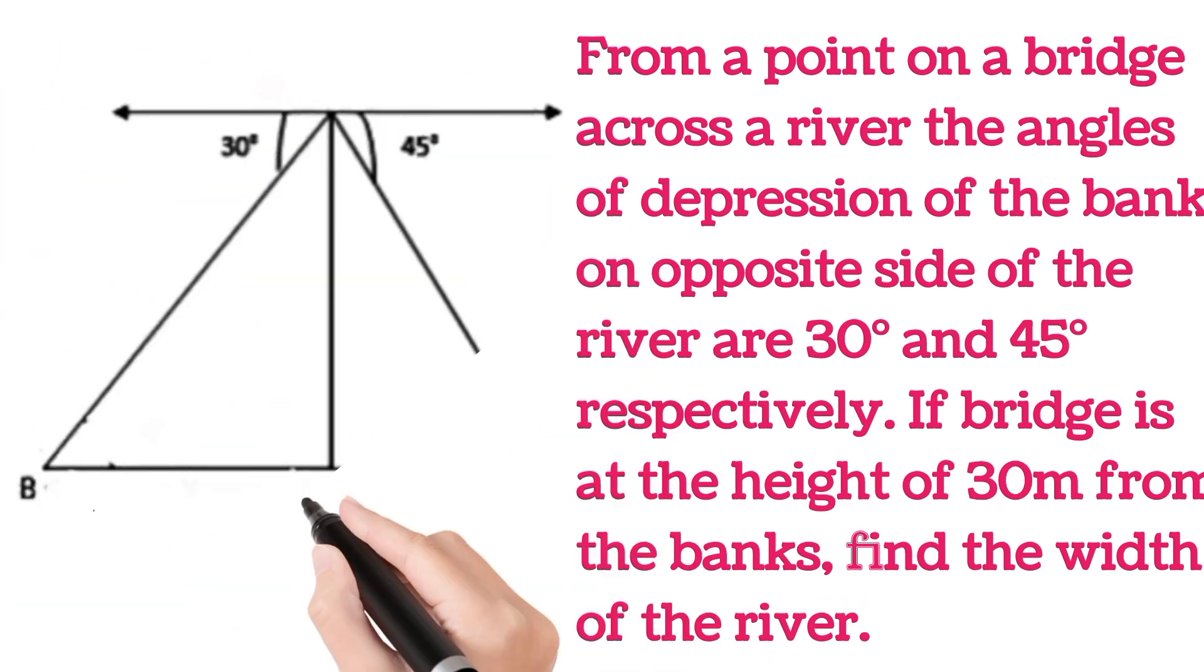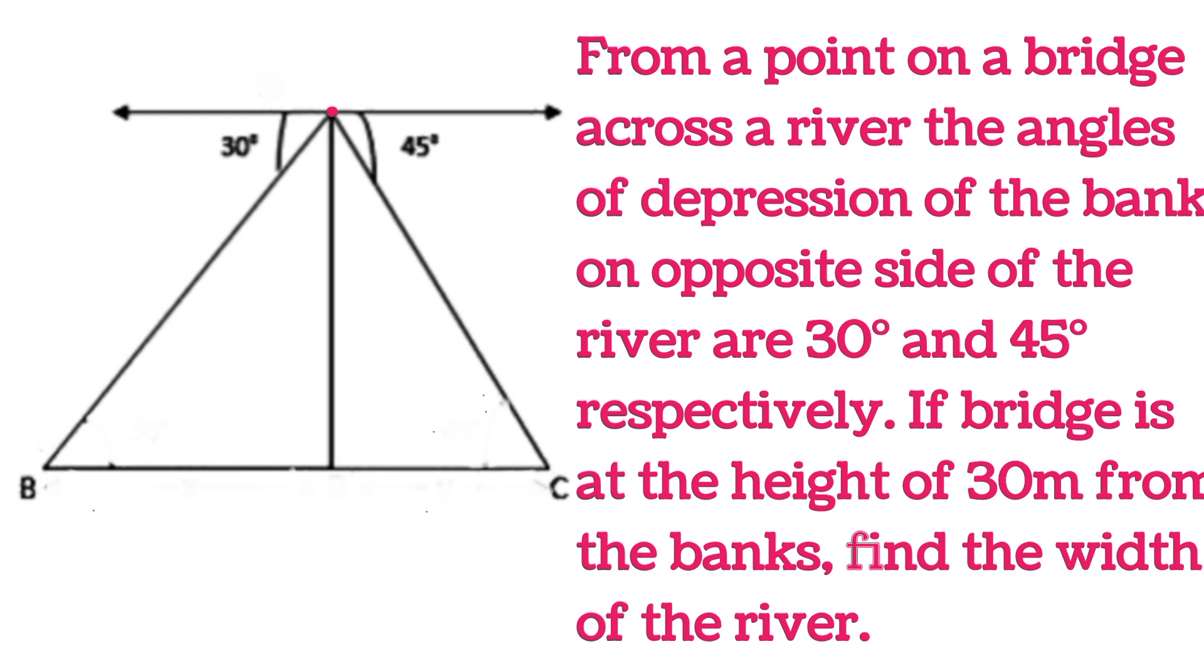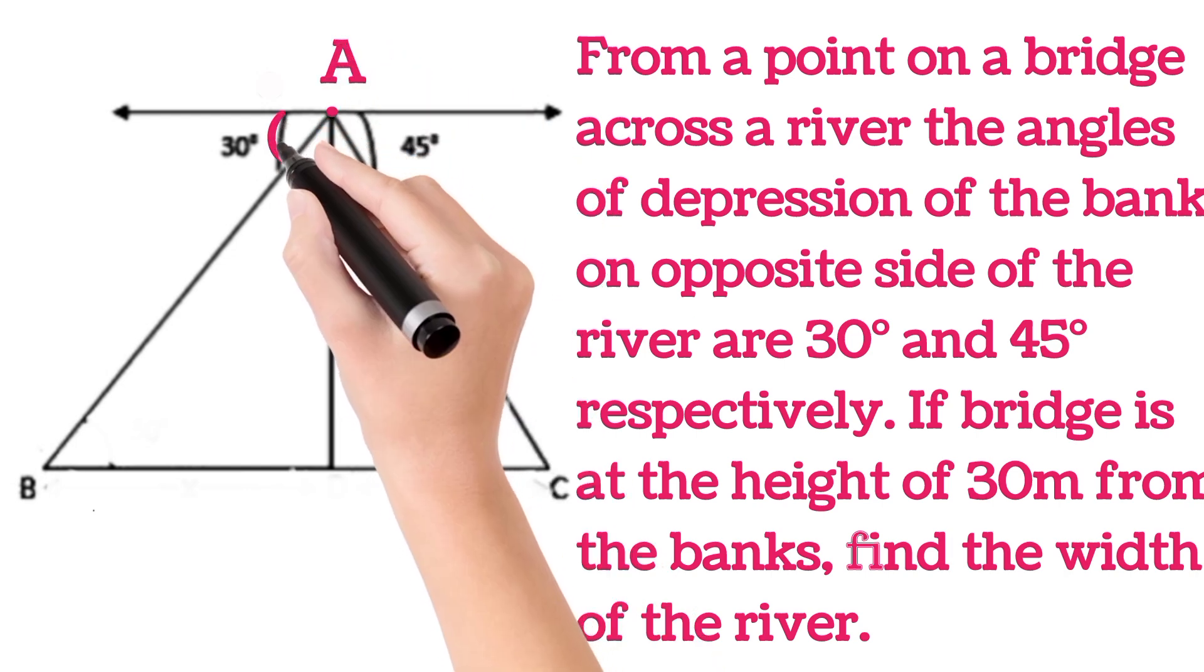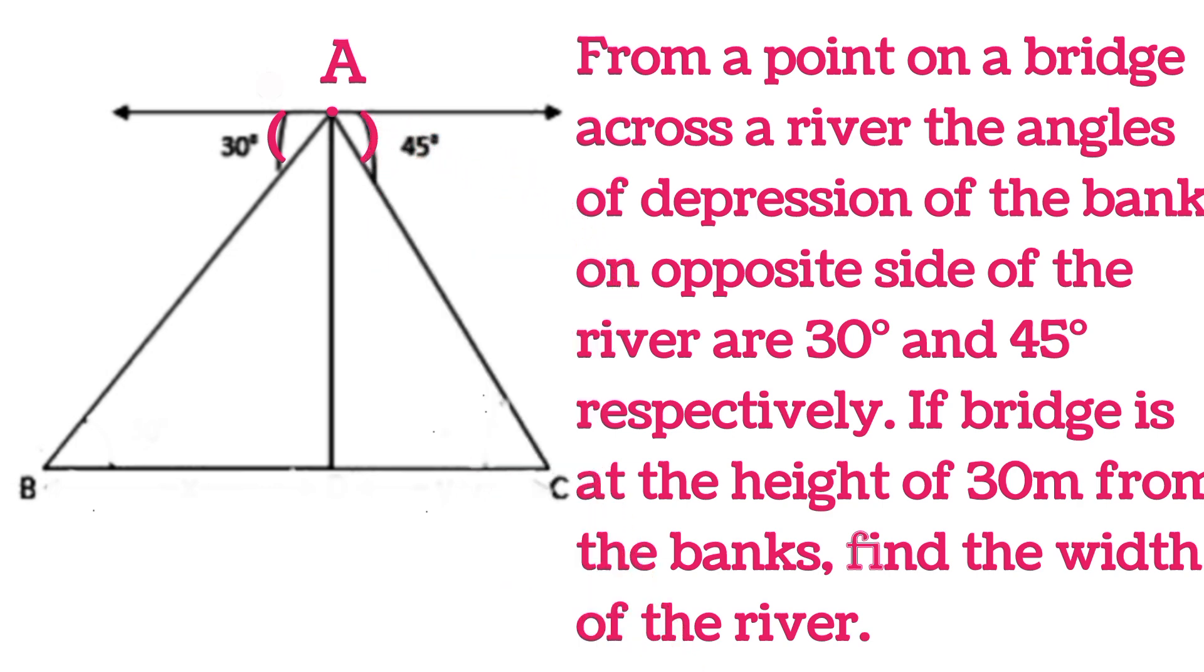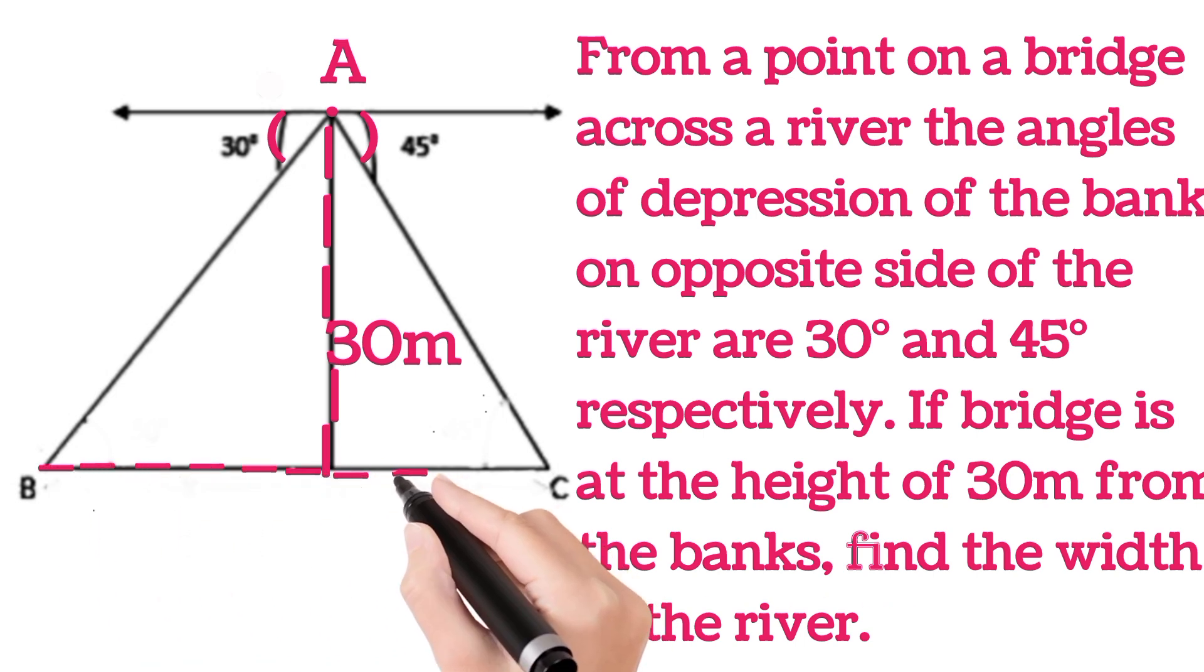So let us draw the figure. Now let us suppose this is a point on the bridge from which the angle of depression is given 30 degrees and 45 degrees, and this height is given 30 meters, and we have to find the width of the river, that is length of BC.